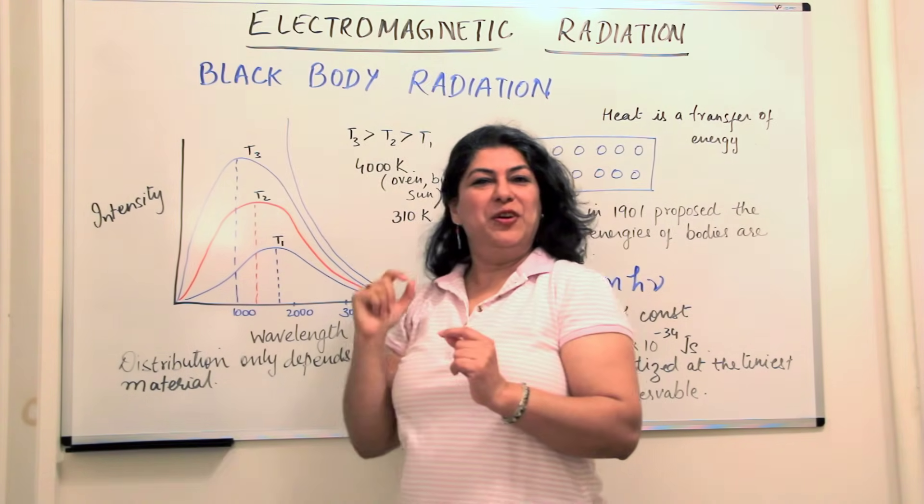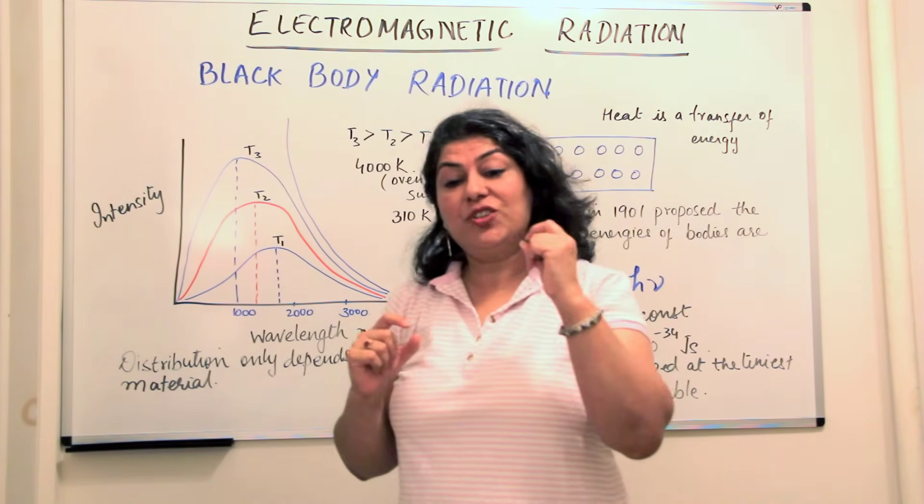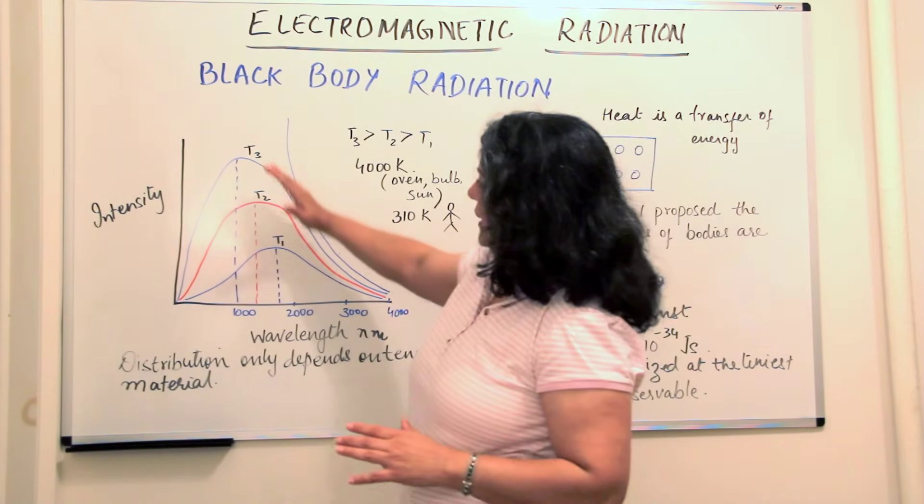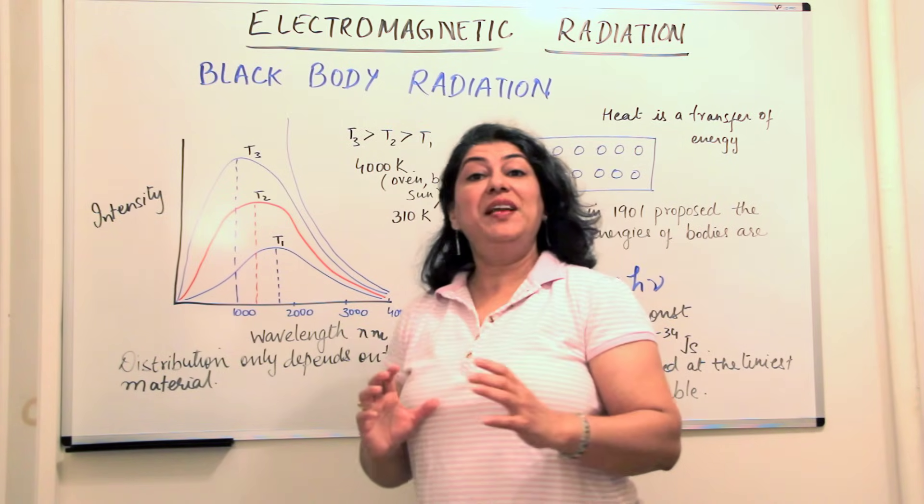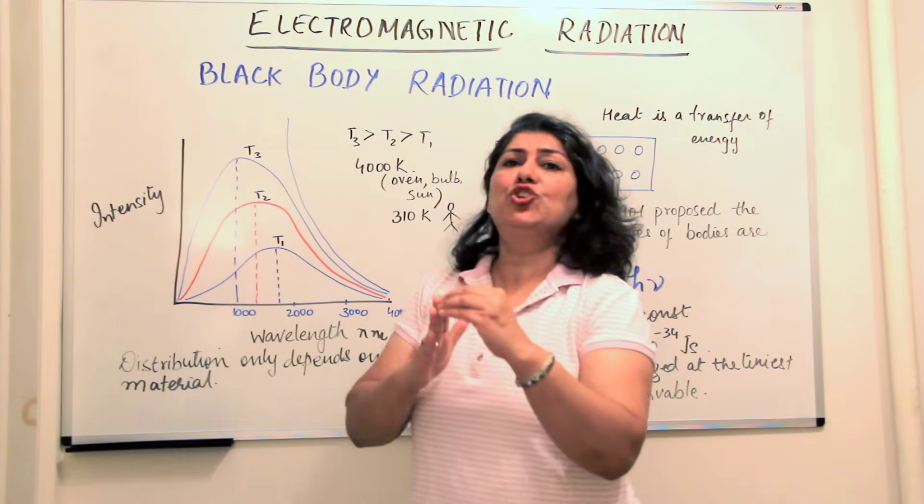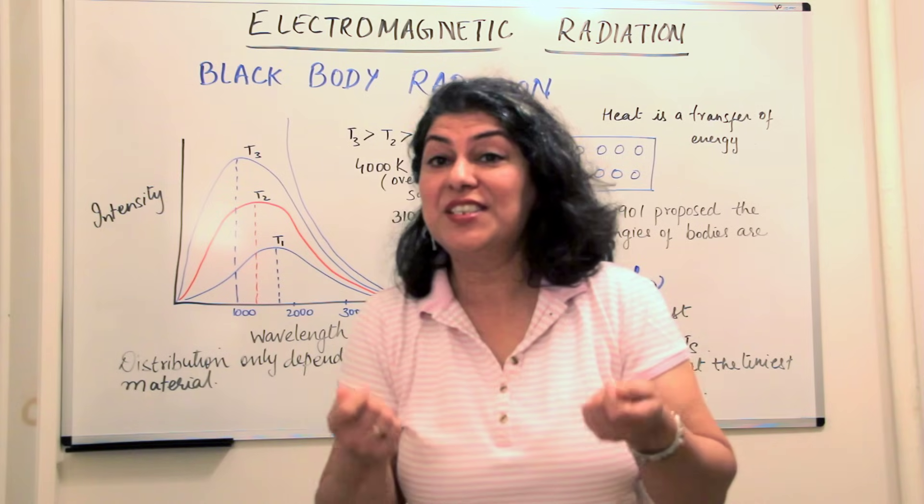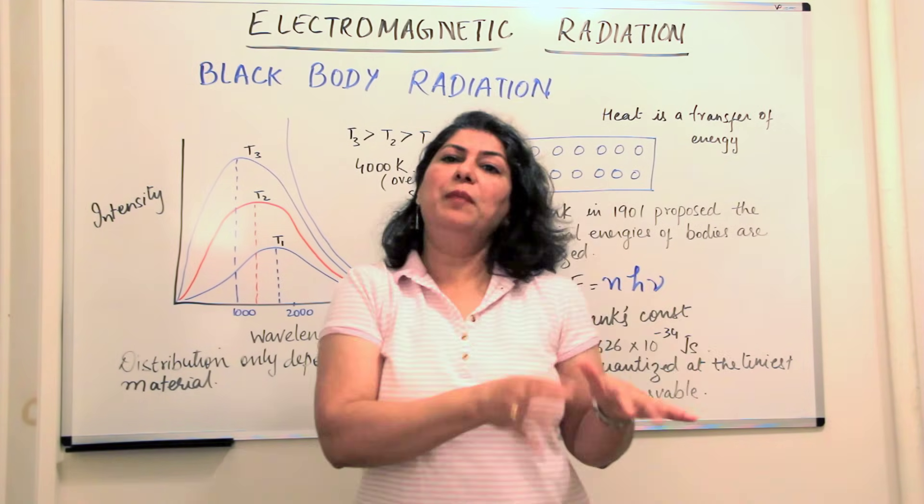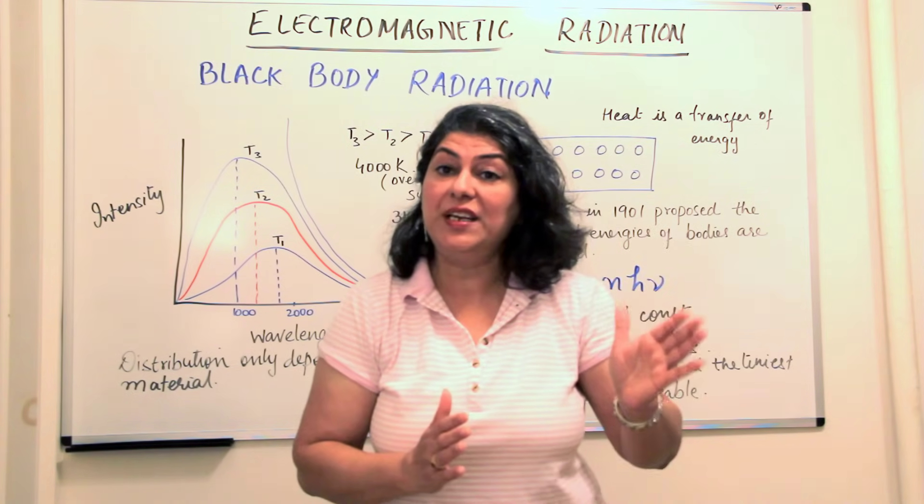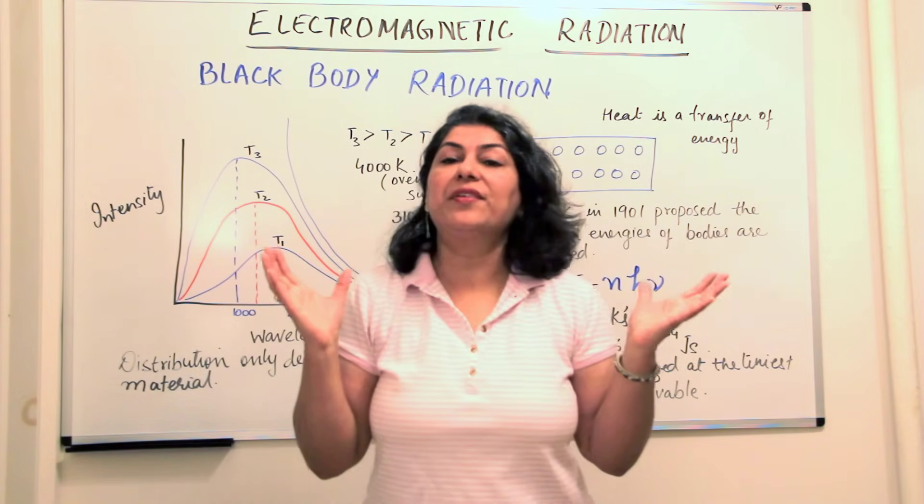This was dramatically known as the ultraviolet catastrophe because as we go on heating, the intensity should increase and when it reaches the ultraviolet radiations area, the intensity should be so high that like if you have an oven or a light bulb which gets heated up, when it reaches ultraviolet radiation, the intensity should be so high that we should be blasted by ultraviolet radiations.